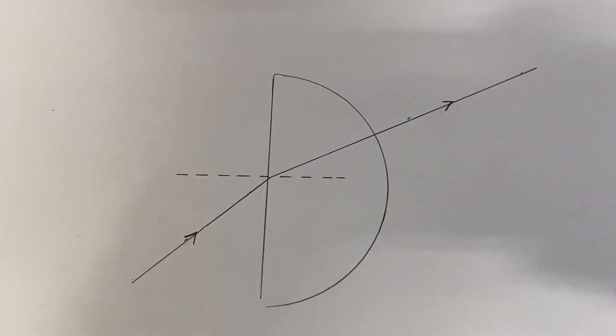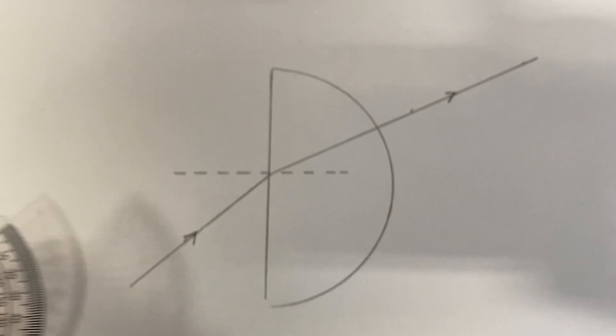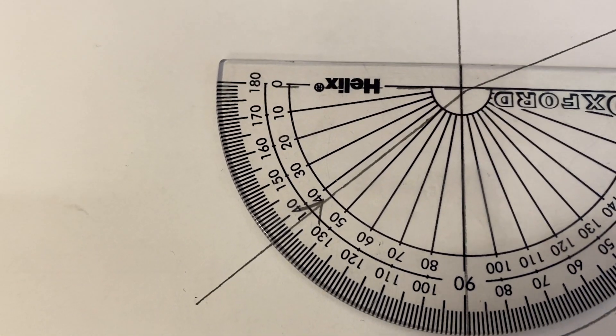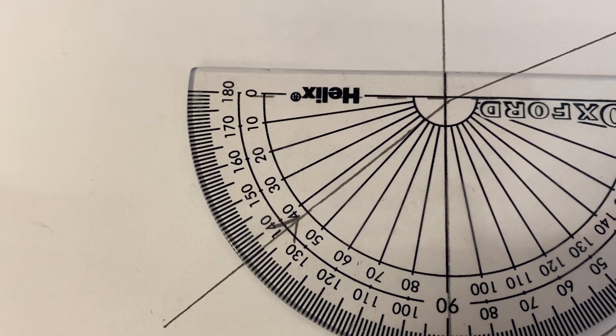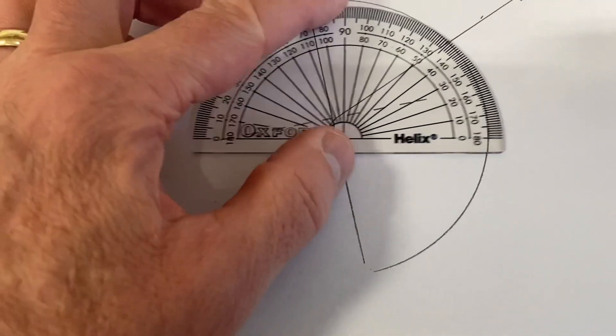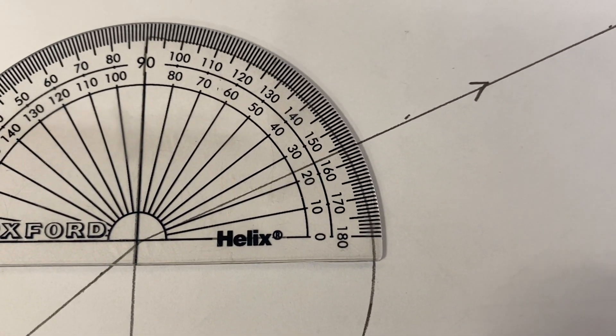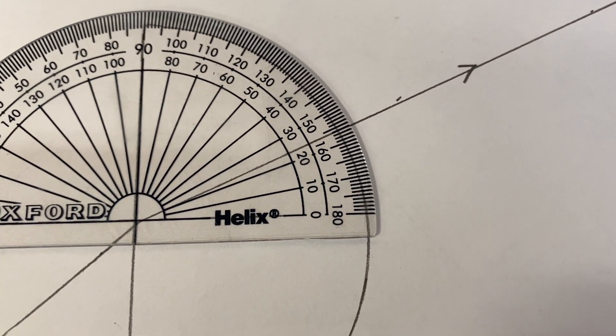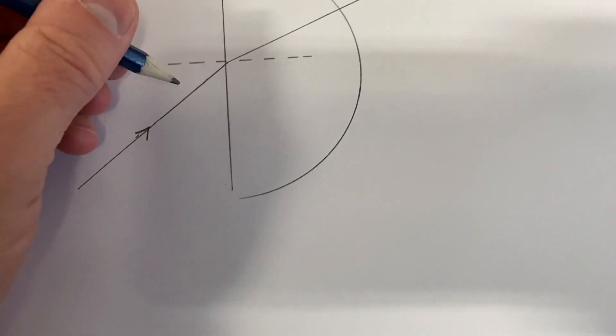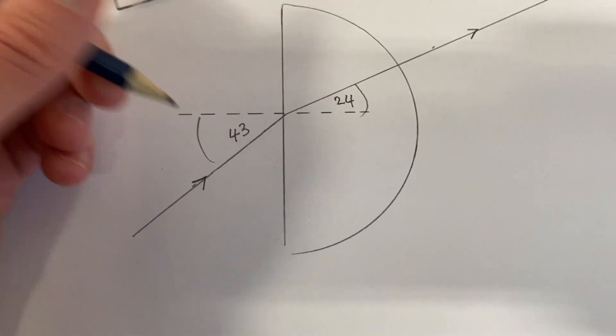There's my completed diagram. As the light goes from air into glass, it bends towards the normal. If I was to measure these with a protractor, then that first angle is about 43, and another angle, about 24. So again, the angle is smaller in the perspex. 43, 24. That's refraction.